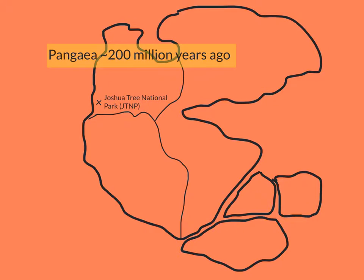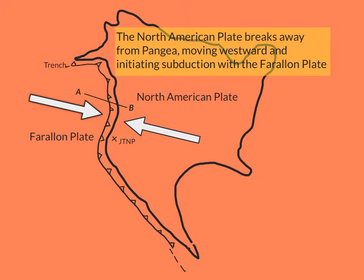Starting around 200 million years ago, North America broke away from Pangaea. Moving westward, subduction started along the western margin of the North American continent, between the North American Plate and the Farallon Plate.